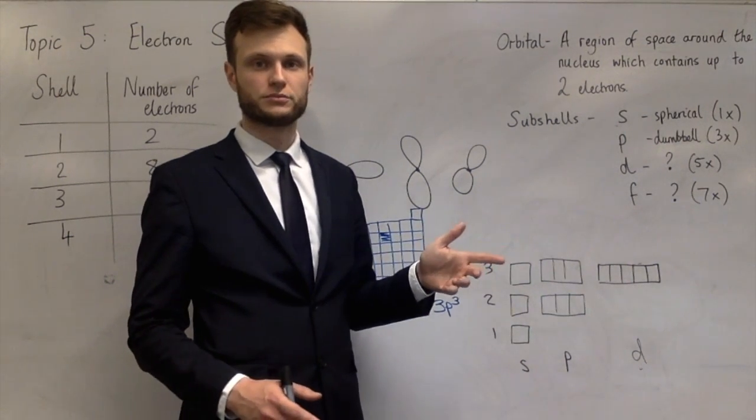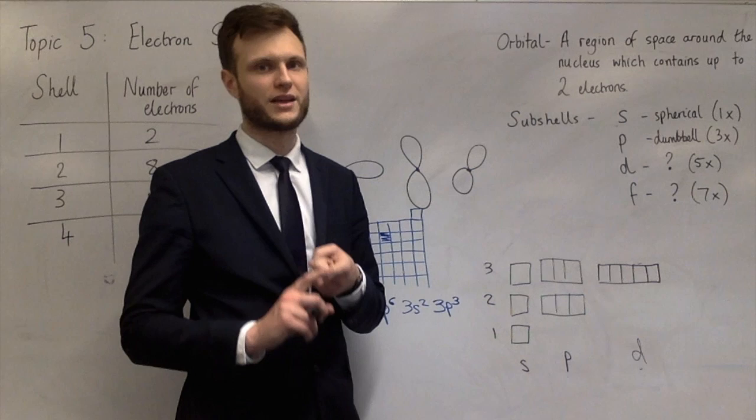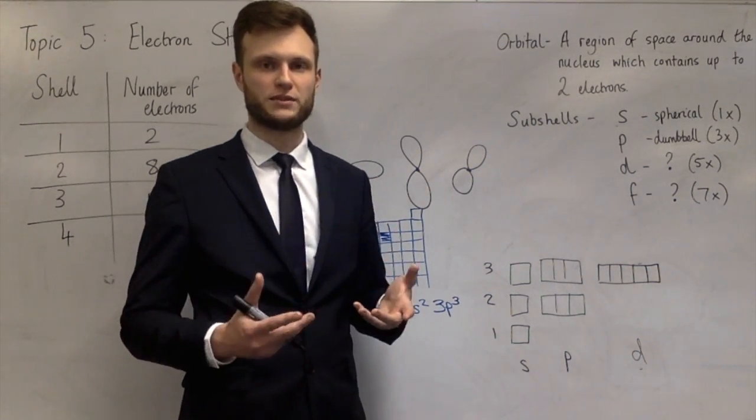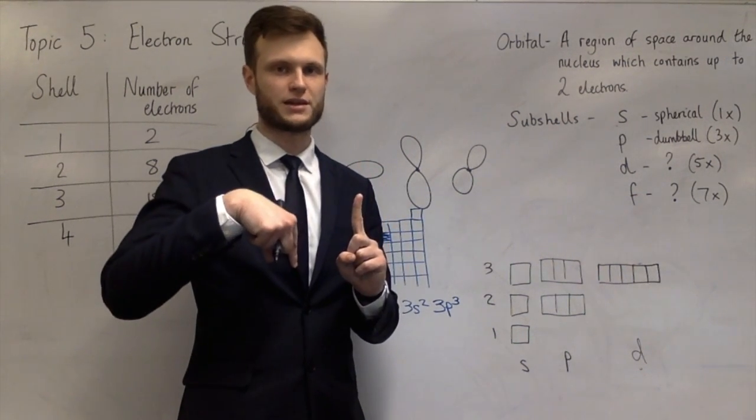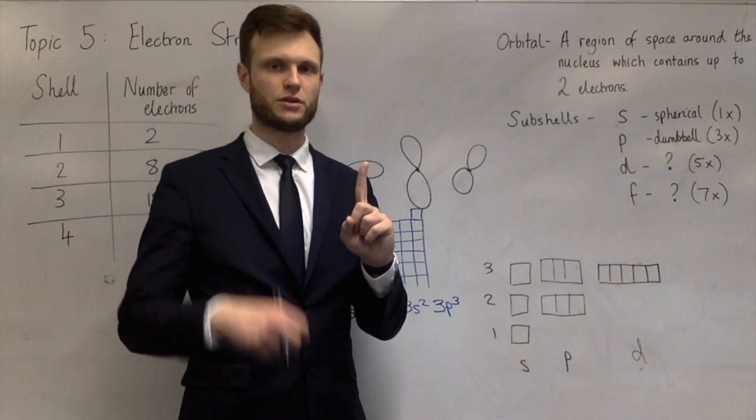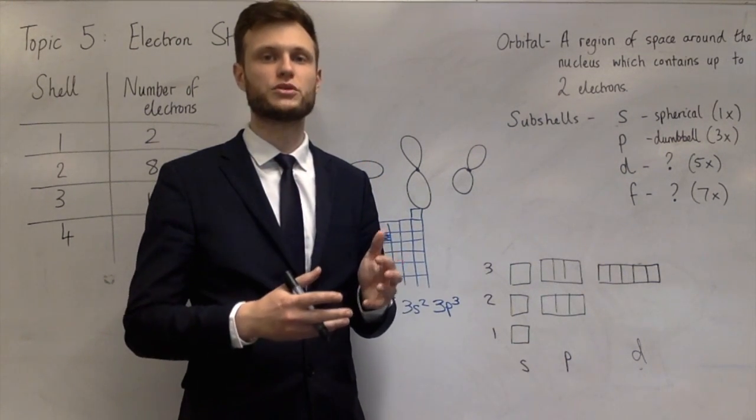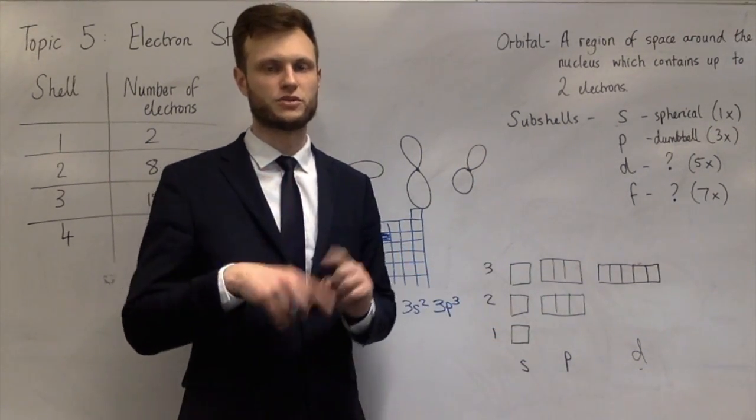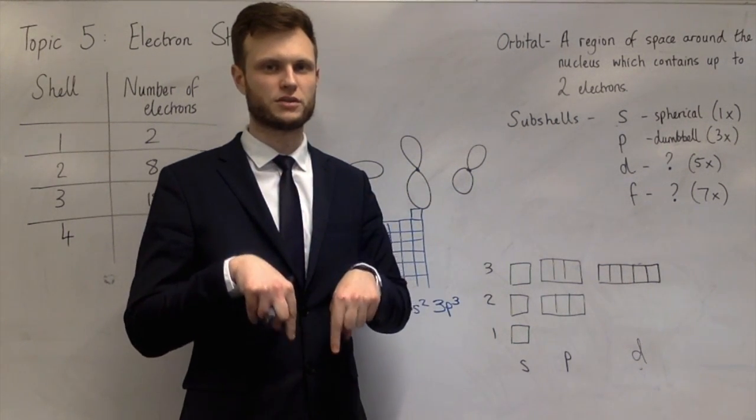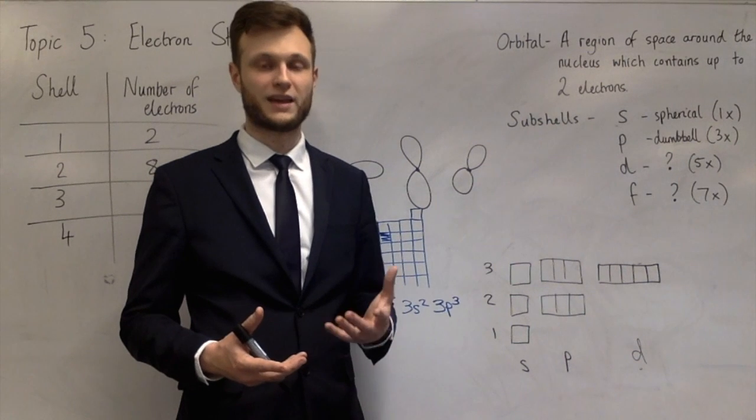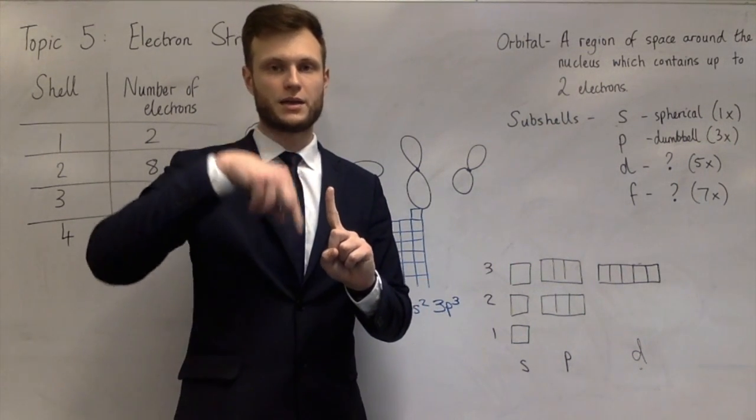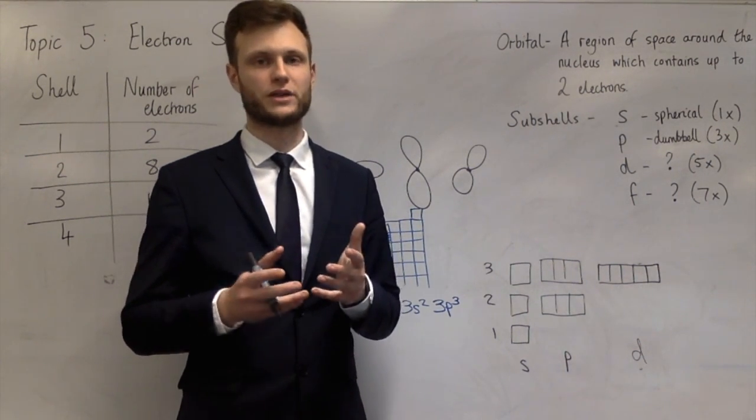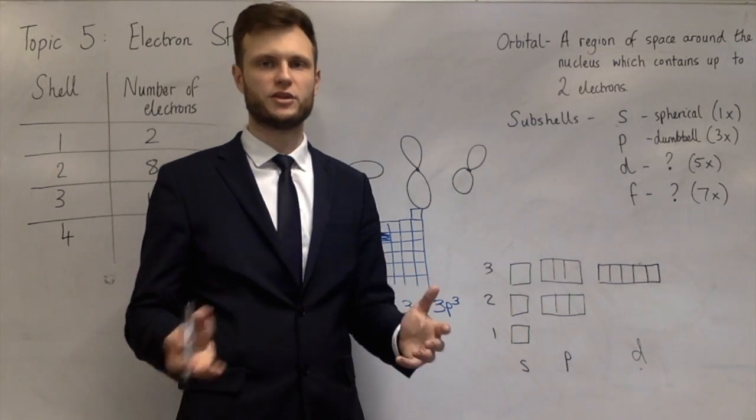The way you fill the boxes is with arrows. And the reason you need arrows is because of something I haven't told you yet, and that's something called spin. Electrons have a property called spin, and they can either be spin positive or spin negative. And we represent those spins with an up arrow and a down arrow. It doesn't matter which one you start with, but it's very important that in one box, you can't have two of the same arrow. So no two up arrows, no two down arrows. There's very little you actually need to know about spin, except that you can't have two electrons with the same spin in the same orbital. If you want to know more about that, it's called the Pauli exclusion principle, P-A-U-L-I. Feel free to Google it.